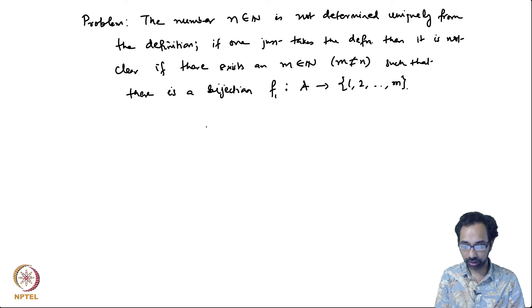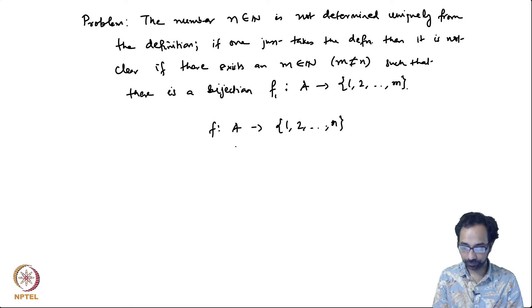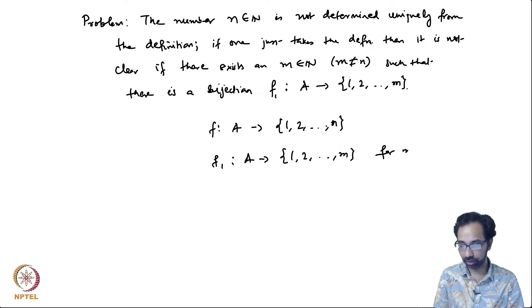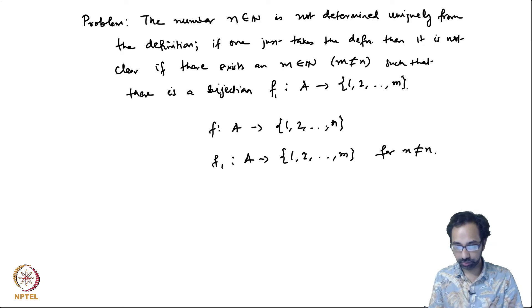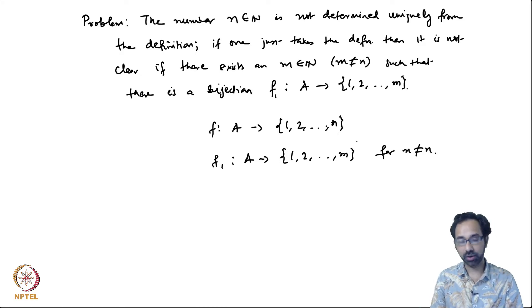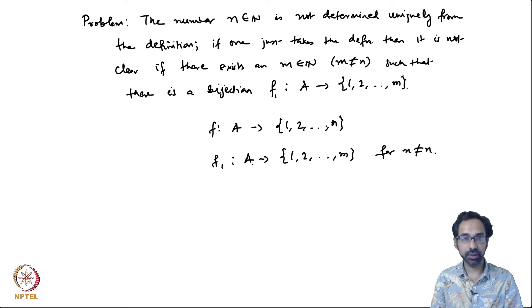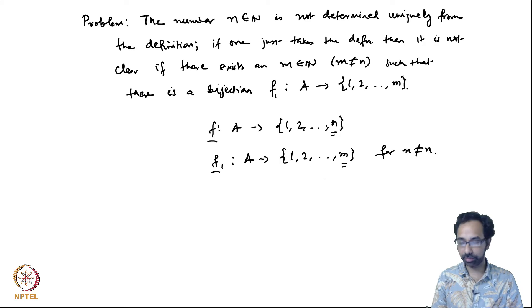We have said A is finite if there exists a bijection to {1, 2, ..., n}, but we could also have a bijection f₁ from A to {1, 2, ..., m} for m not equal to n. This is absurd because if you count a set it cannot yield two different numbers at the same time — a bijection here is just counting the number of elements. Having both bijections would say A has n elements and also m elements for m ≠ n.